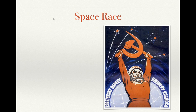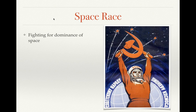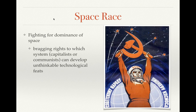Next is the space race. This image shows a Soviet cosmonaut — their astronauts were called cosmonauts — holding the hammer and sickle, the symbol of the Soviet Union. The hammer represents industrial workers, the sickle the agrarian workers or farmers. We were fighting for dominance of space partly out of Cold War fear — we didn't know the capabilities. Could the Soviets put weapons in space or drop things on us from a satellite? But it was also a race about who has the better technology — bragging rights for capitalism versus communism. Whoever wins could claim their system is superior.